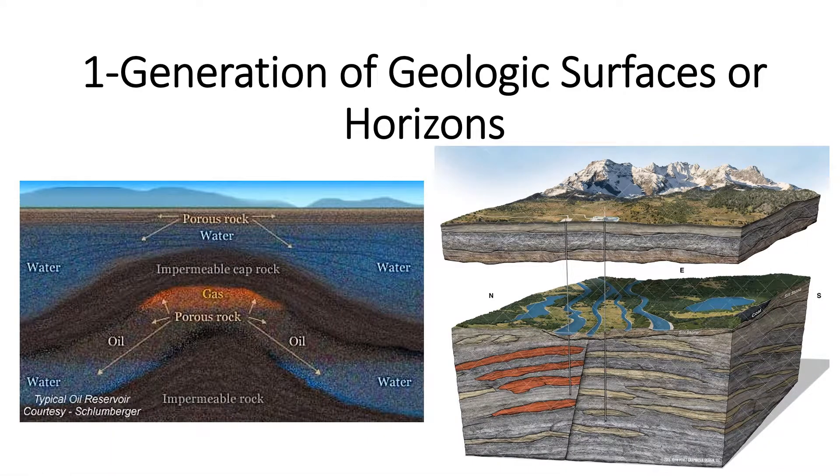The first thing that you should consider is geological surface. Look at the picture on the left side. It is a simple reservoir. You can see the two impermeable cap rocks as well. There are geological surfaces for this reservoir. But the fact is that reservoirs are not always that simple like this and have just only two geological surfaces.